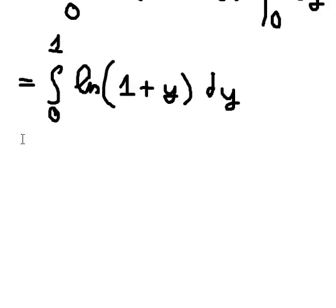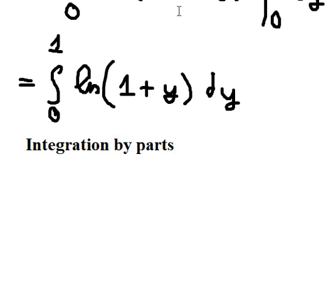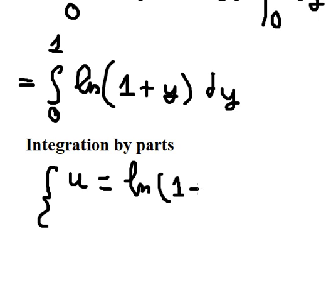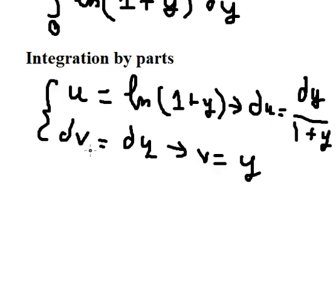So we can use integration by parts. I will put u equals ln of 1 plus y. Later we need to take the derivative for both sides and we have like this: dv is dy. The integration of this one gives v equals y.